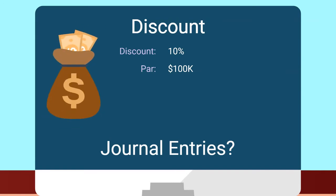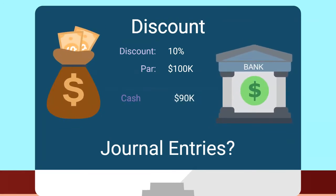Sure, we can take a look at that. Staying with those examples, your discount entries would be a debit to cash for $90,000, a debit to debt discount for $10,000, and a credit to debt for $100,000.